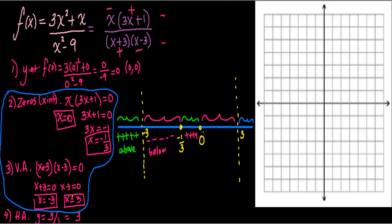For the region from 0 to 3, I choose x = 1. The numerator factors give positive values, but 1 minus 3 is negative in the denominator. Positive over negative is negative, so the graph is below. For 3 to infinity, I choose x = 4, giving positive over positive, which is positive — above the x-axis.